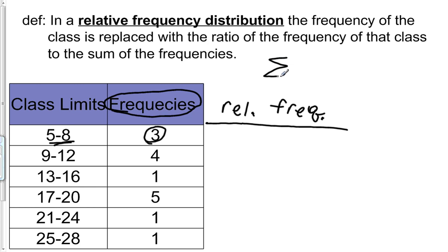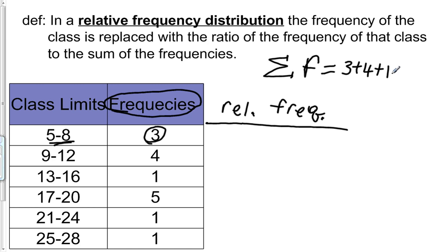Remember this symbol here — the sigma — the sigma means to add them all up. The sum of the frequencies, which we call F, is what I get when I add all these numbers in the frequency column. So it would be 3 plus 4 plus 1 plus 5 plus 1 plus 1, and that sum is 15.